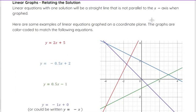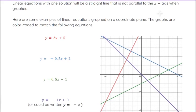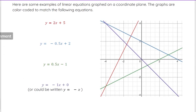So relating the solution to the graph again, linear equations with one solution will always be a straight line that is not parallel to the X axis. So that means it's not horizontal when it's graphed. Let's look at some examples, and I have them color-coded for you. Now, I want to point out, if you were to solve these by putting a 0 in for Y, because that's what the solution is really doing, if I were to solve this first one, I would get X equals negative 2.5.